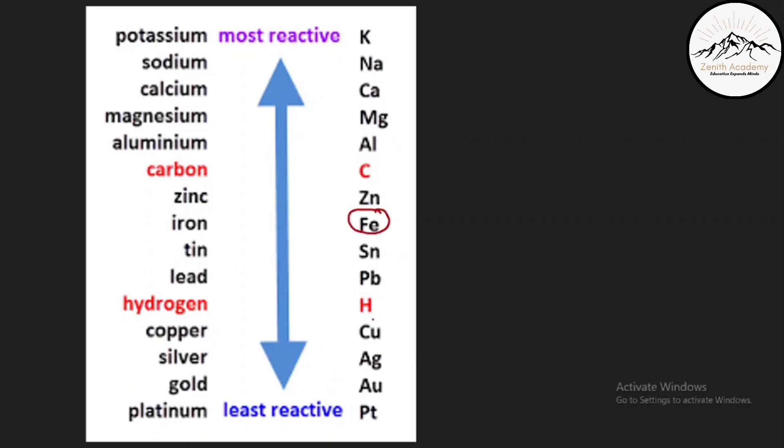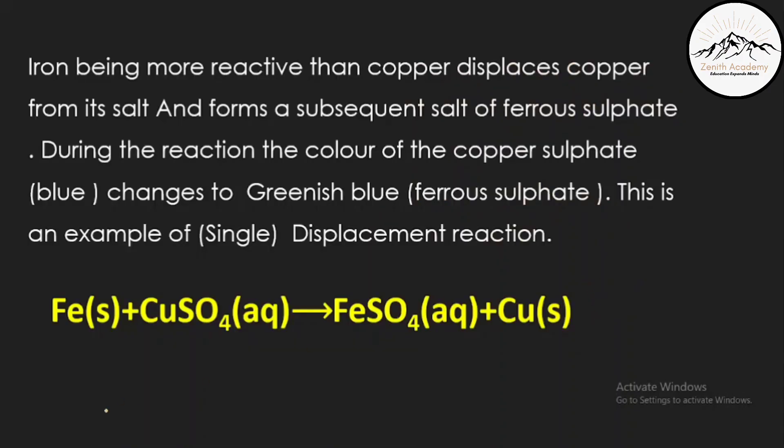So here is iron and here is copper. Iron is above copper in the reactivity series. That means iron is stronger. So if iron is stronger, it can displace or kick off copper from its own solution, from its salt solution. So let's see what happens here.